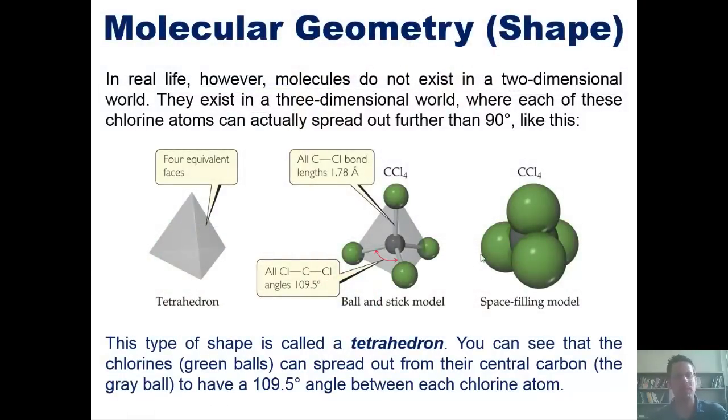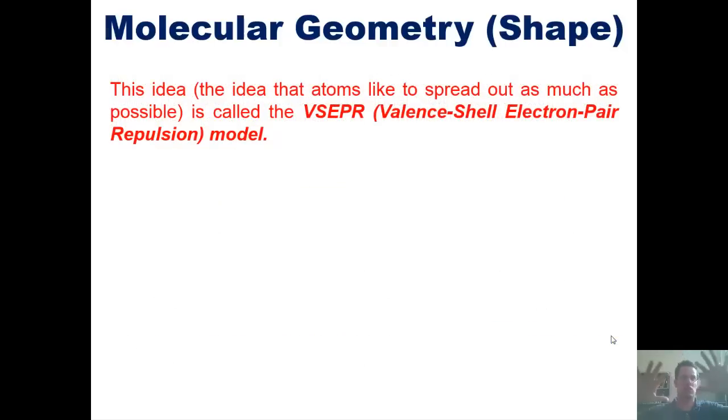Now this type of shape is called a tetrahedron. You can see that the chlorines, which are the green balls in this picture, can spread out from their central carbon atom to have about a 109.5 degree angle between each chlorine atom. This idea—the idea that atoms spread out as far apart from each other as possible—is called the VSEPR or valence shell electron pair repulsion model. Sometimes I just like to call it VESPER because it rolls off the tongue a little bit easier than VSEPR.